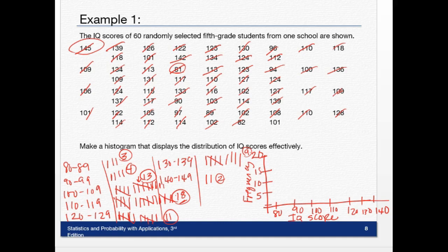So from 80 to 89, I only had 3. So it's going to be a very small bar. 90 to 99, I had 4, so it's going to be just slightly more. 100 to 109, I had 13. 110 to 119, I had 18. So it's going to go almost all the way to 20.